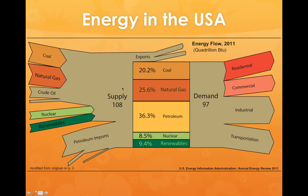Our supply of energy is on the order of 108 quadrillion BTUs, otherwise known as quads. Quads is a very convenient large energy unit to use when talking about energy supplies and demands on a country-wide level. We have a supply of about 20% from coal, 25–26% from natural gas, and a large share from petroleum.